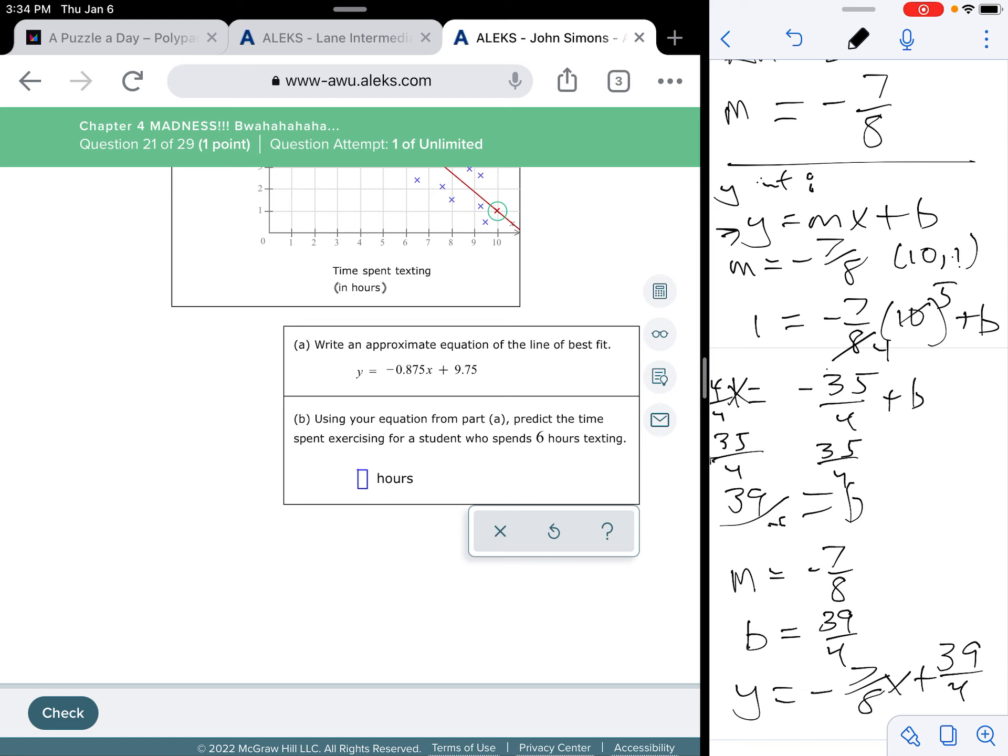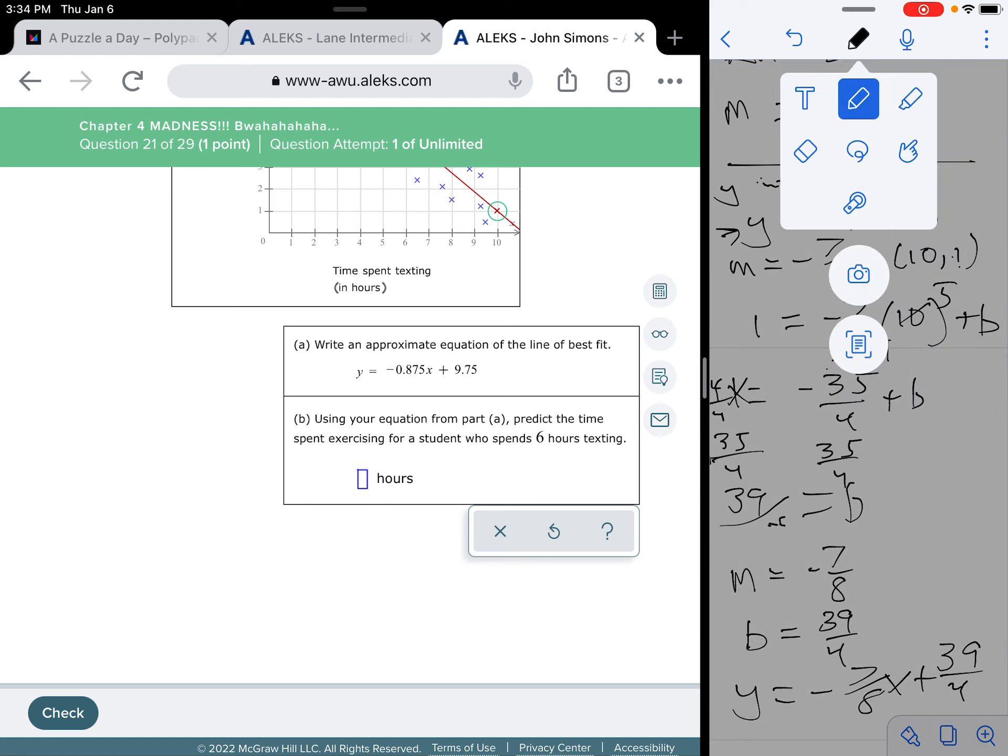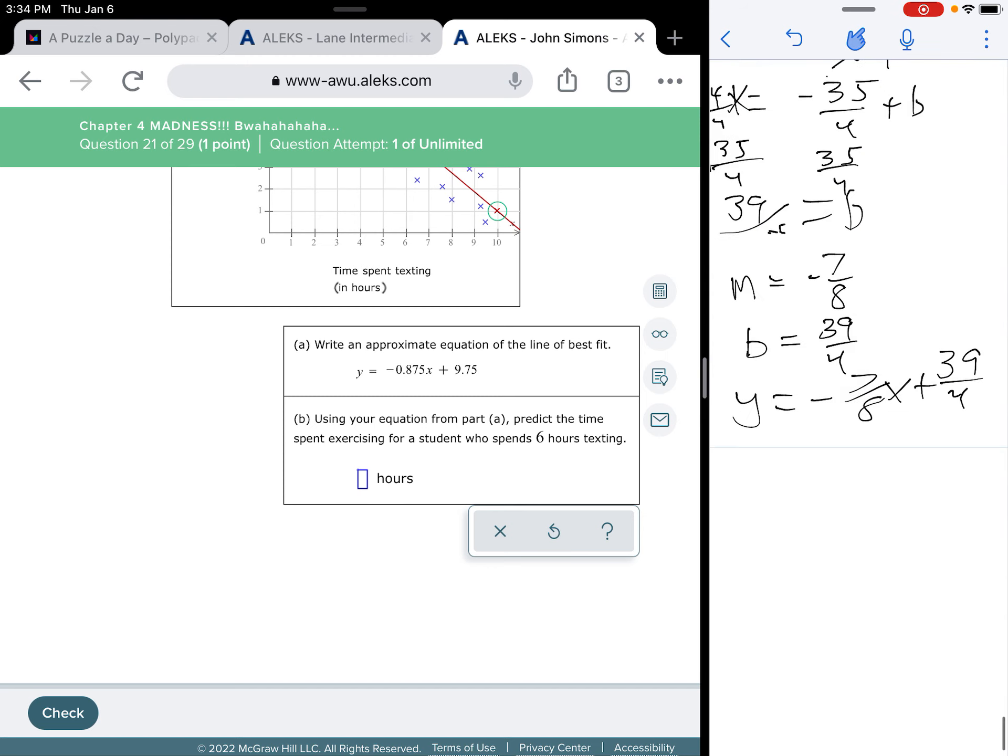So, now, using this equation, let's predict the time spent exercising for a student who spends 6 hours texting. This is pretty easy, because all I've really got to do is just put 6 in for x, and then figure out what I get. So, I got 0.875 times 6 plus 9.75.